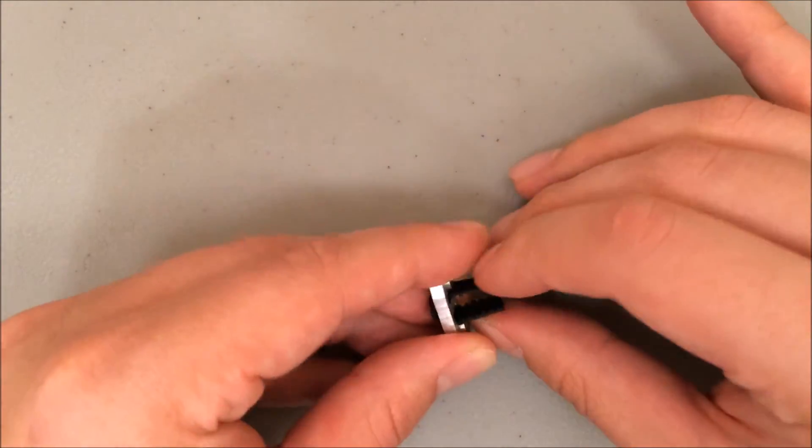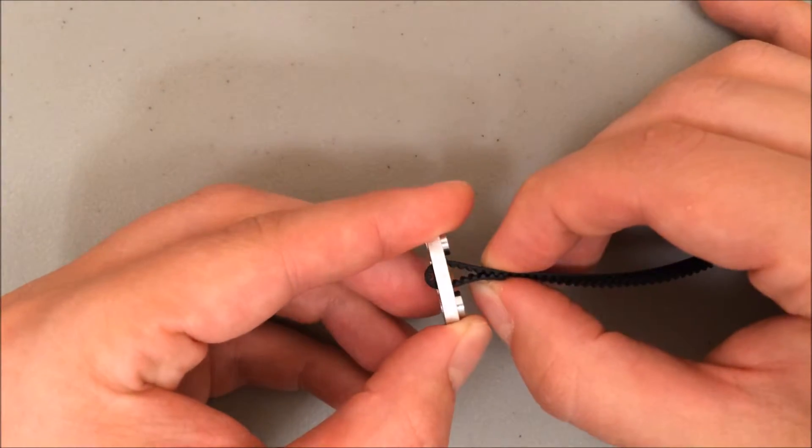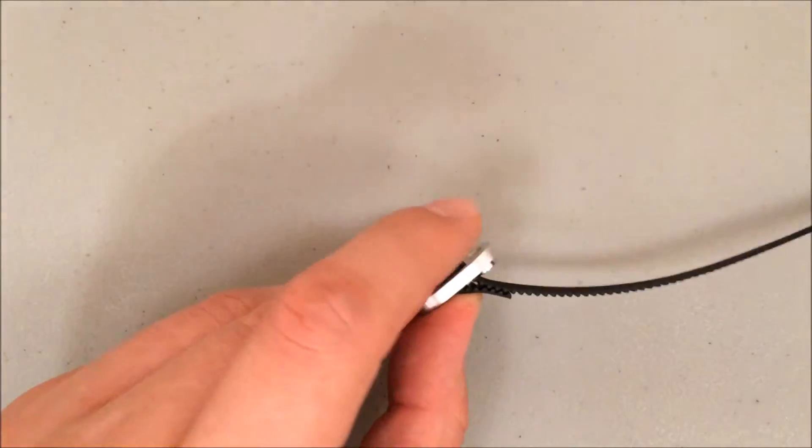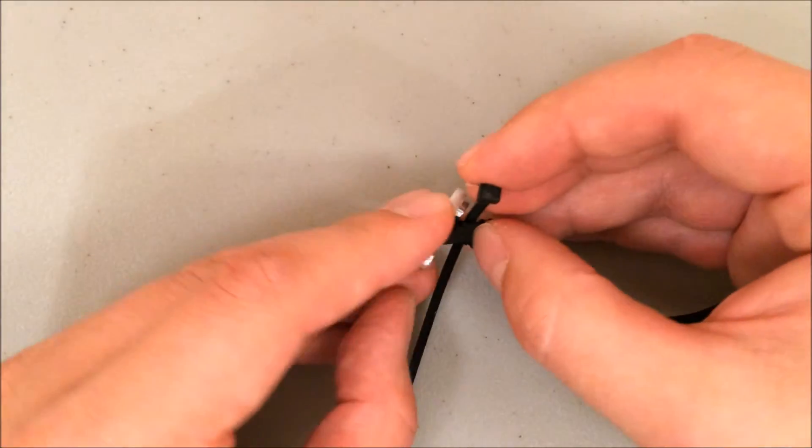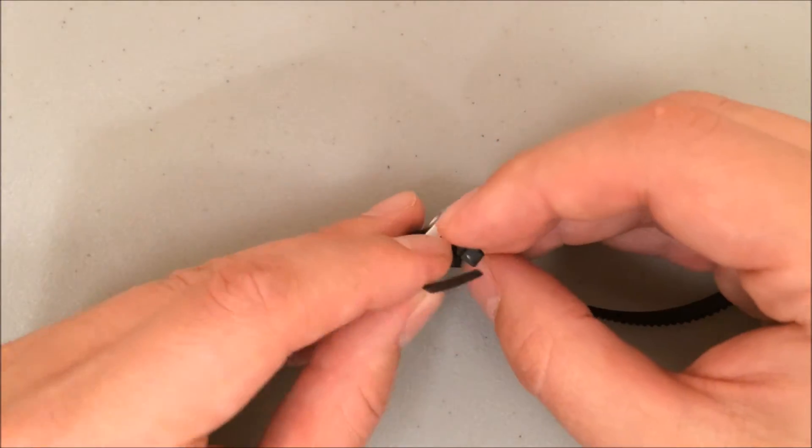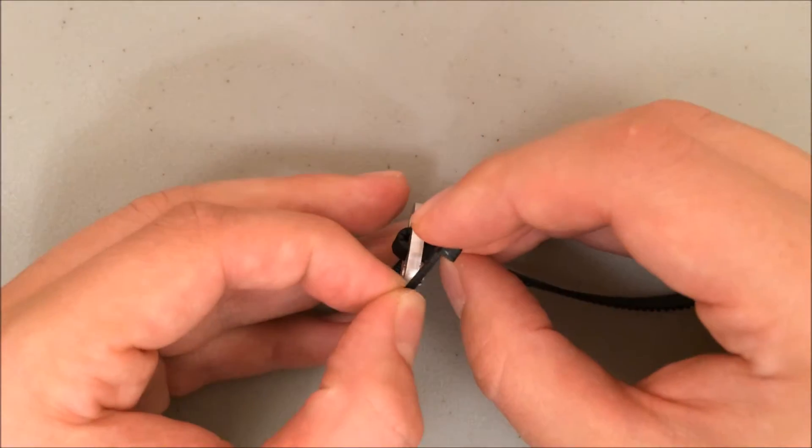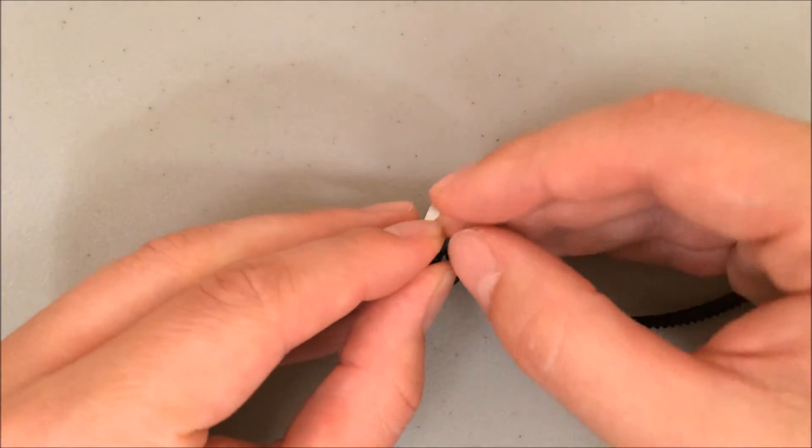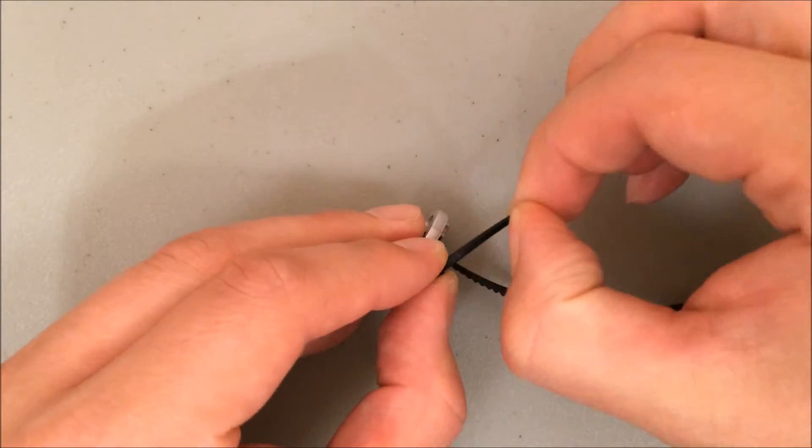And again, remember that you want those teeth to mesh together whenever you put that zip tie on there. It doesn't matter as much where the block of the zip tie is, but you do want to have it on the top side so it doesn't drag on the bed. So don't worry so much about whether it's on the side that's short or long. Just make sure that it's up top.